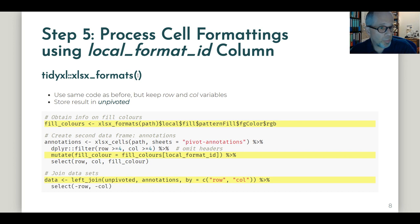The preparatory step is to use the same code as before, but keeping the row and column variables and store the result in a data frame called unpivoted. So we have that available at this point.